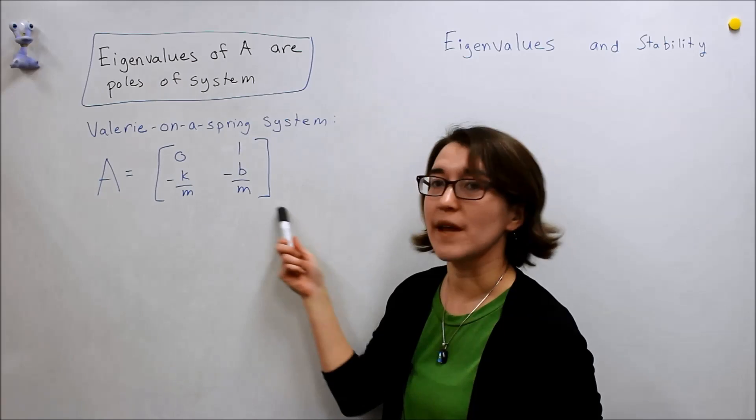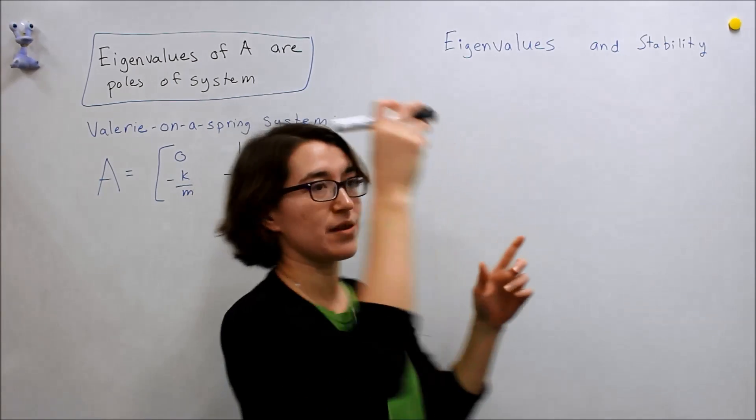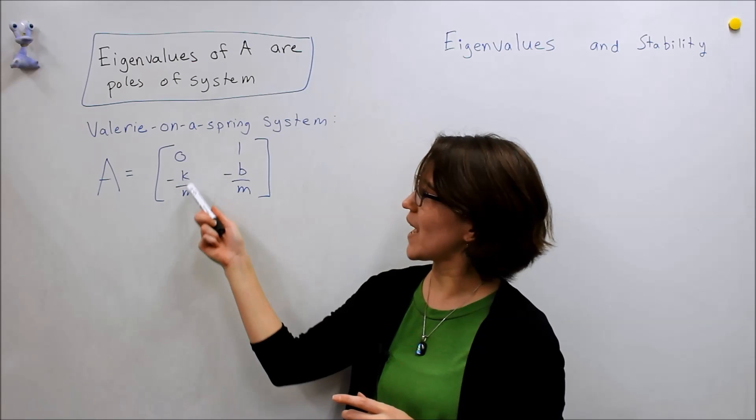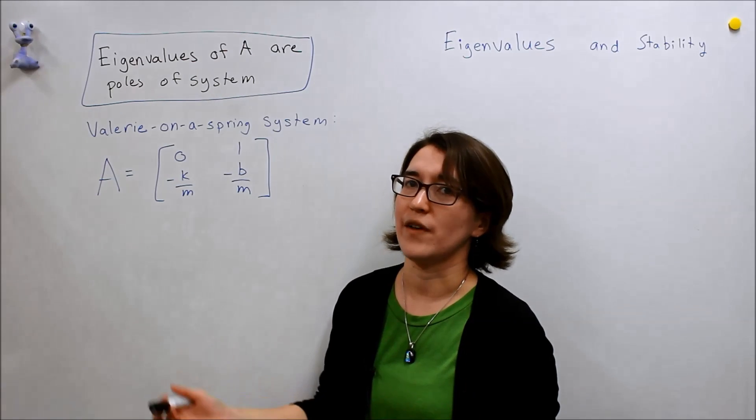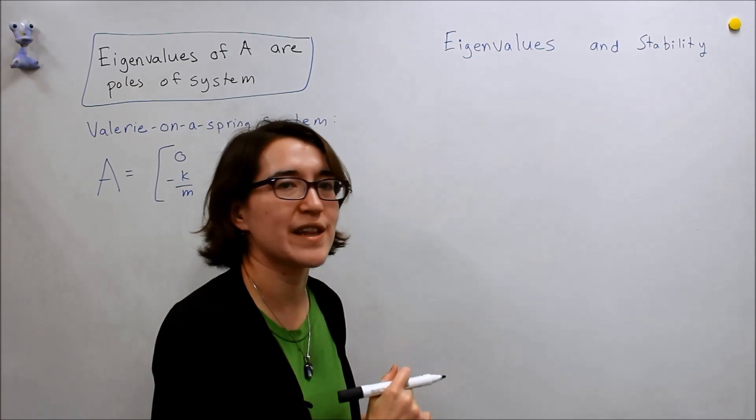So all we have to do now is take the eigenvalues of this matrix. And I'll remind you that this value K, M, and B are all positive values the way that we modeled it. So first let's find the eigenvalues.